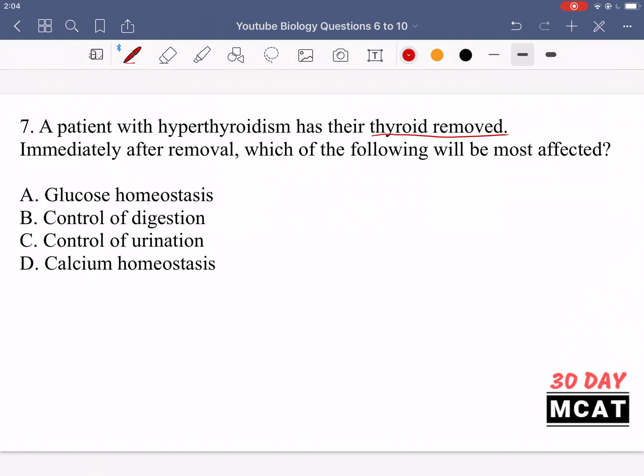A is saying glucose homeostasis. That's not correct. That's not something the thyroid does. It's more so the responsibility of the pancreas. So A is incorrect. B is saying control of digestion. That would be incorrect. That's related to parts of your brain as well as the mechanical sensors in your stomach. So they control digestion, not the thyroid gland. C is talking about control of urination. That's incorrect. That would be related to parts, once again, in your brain and then in your kidney. So that's not what the thyroid gland is involved in. But D is correct. So if you just know the hormones that the thyroid and parathyroid glands secrete, you know that they help control calcium homeostasis. So that is something that we can assume will be affected if someone has a thyroid gland removed.